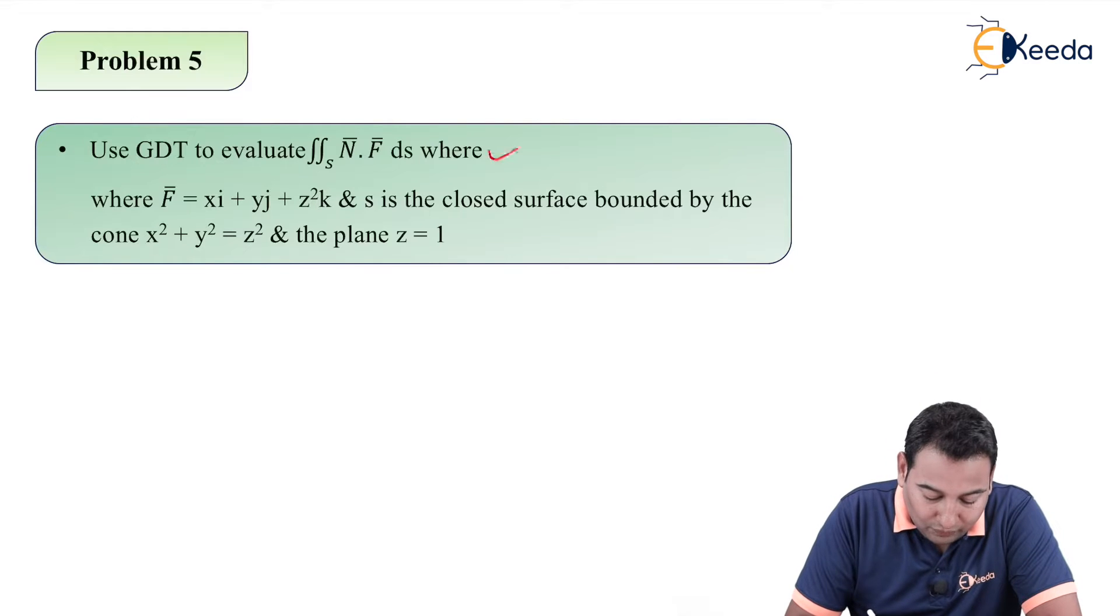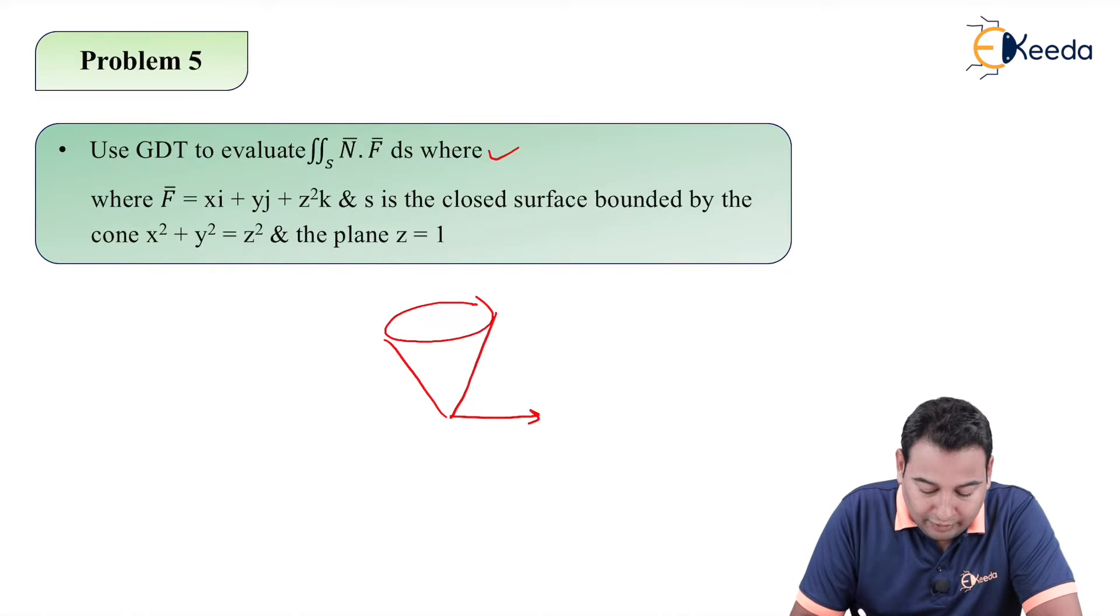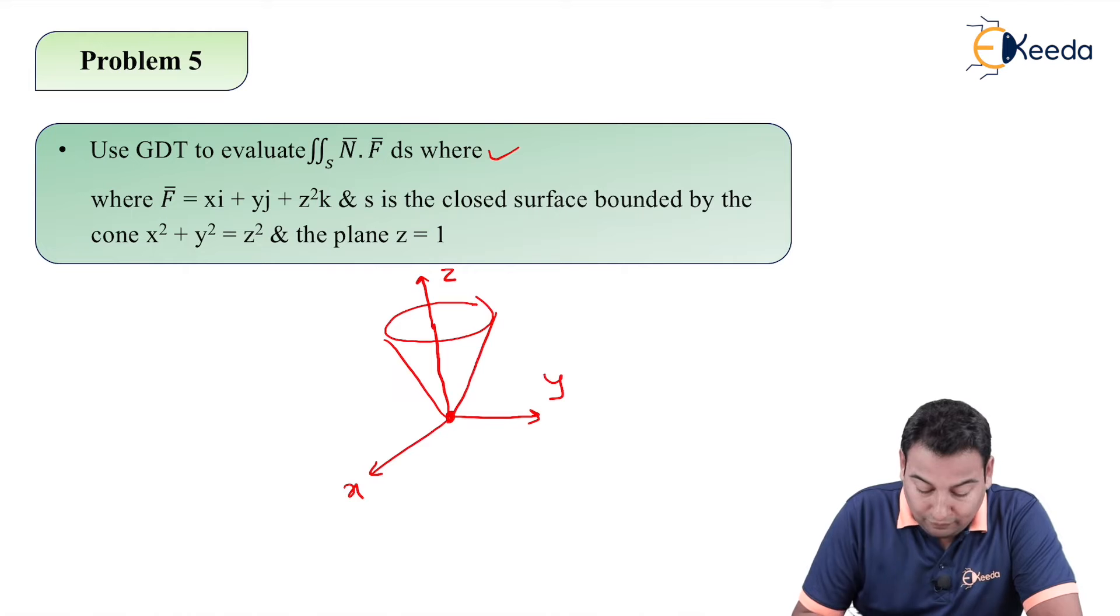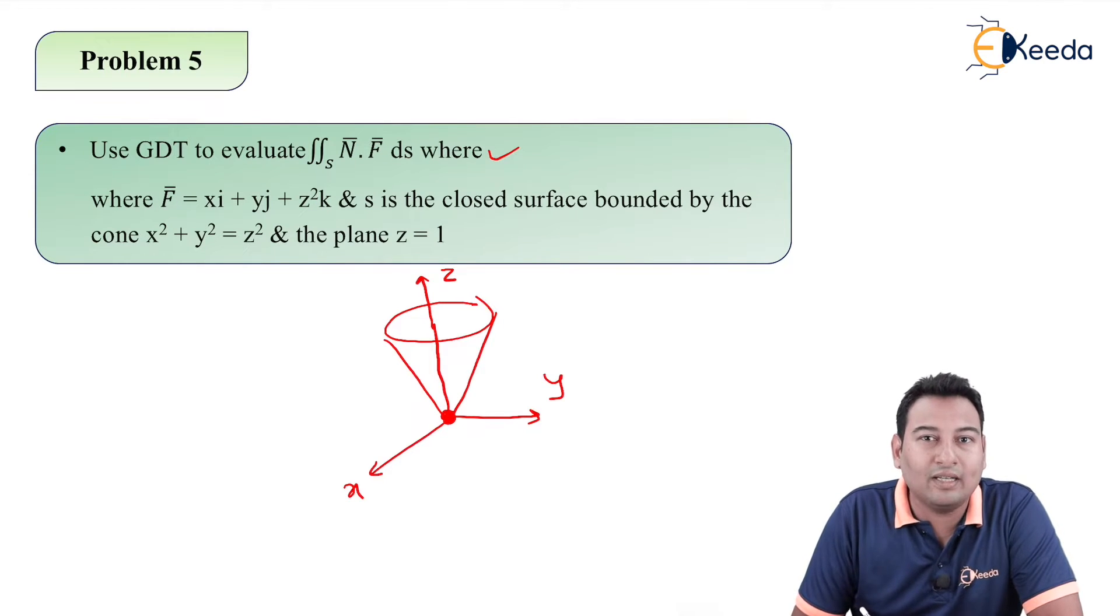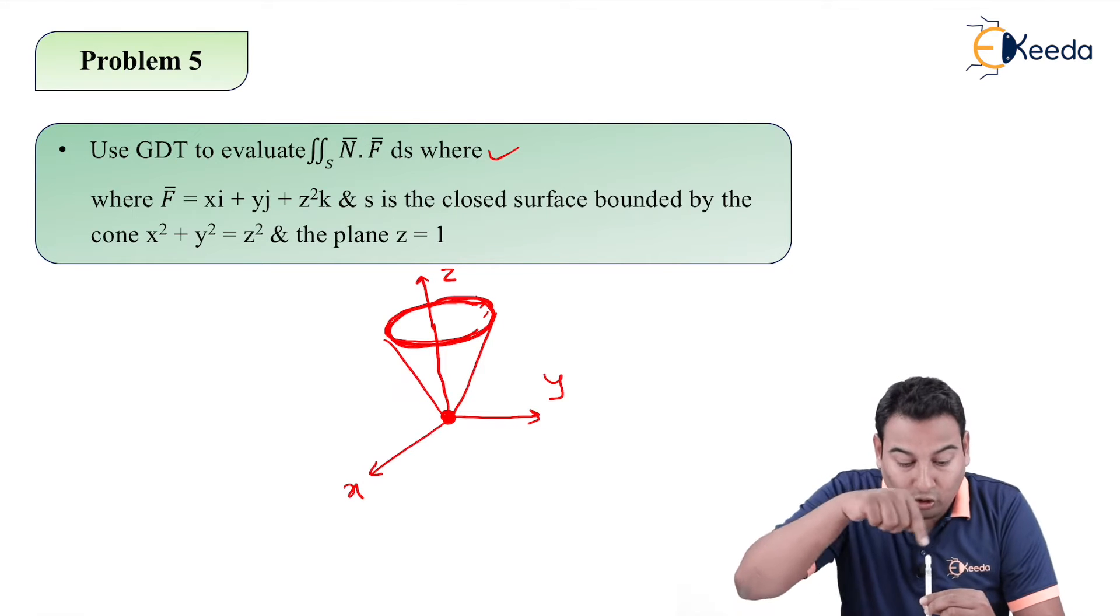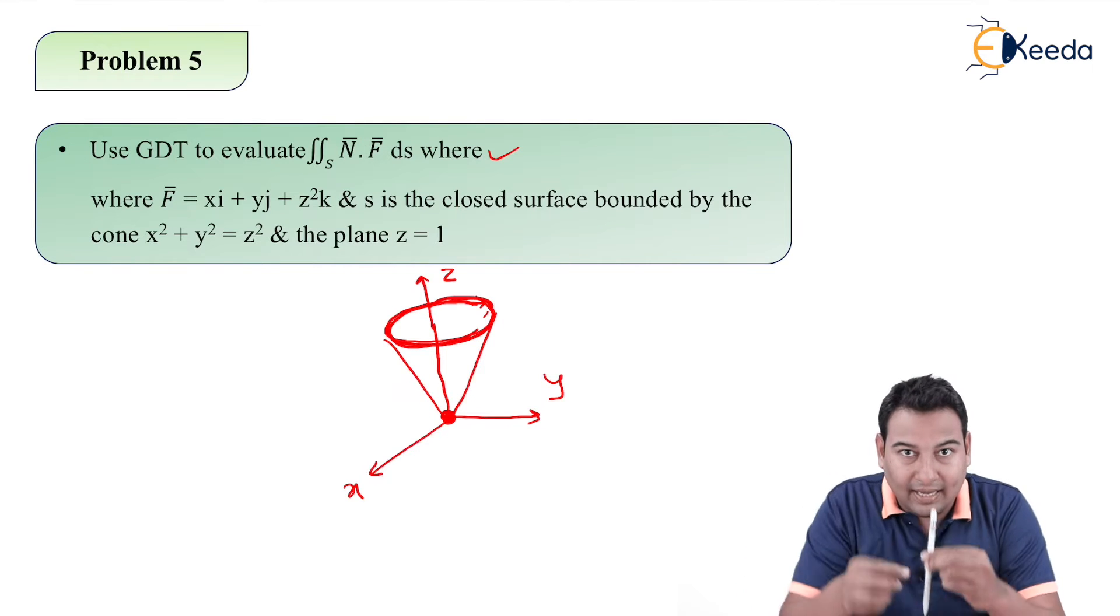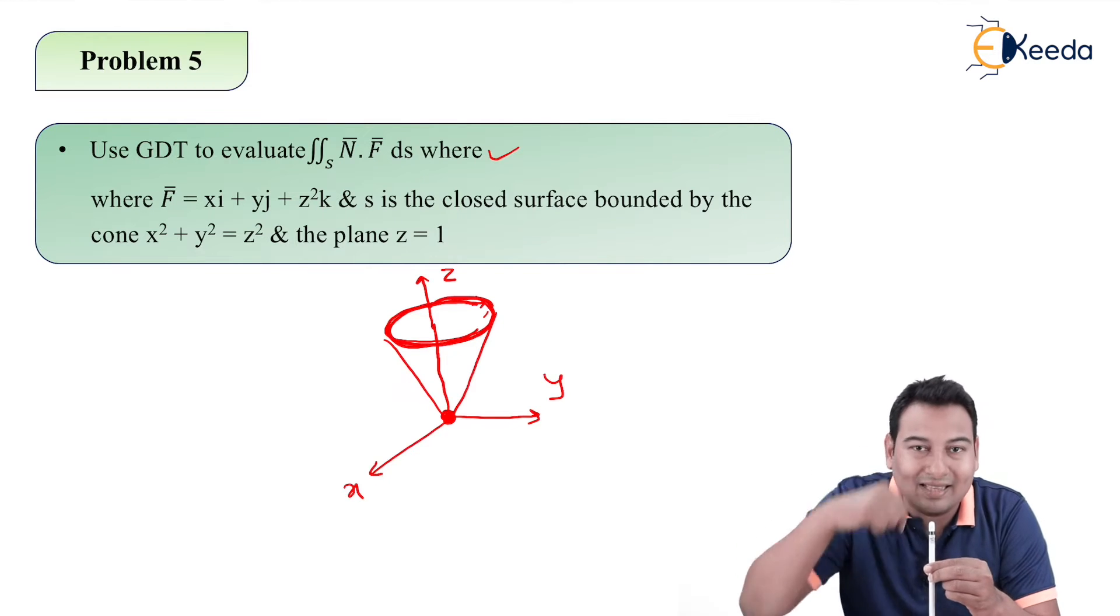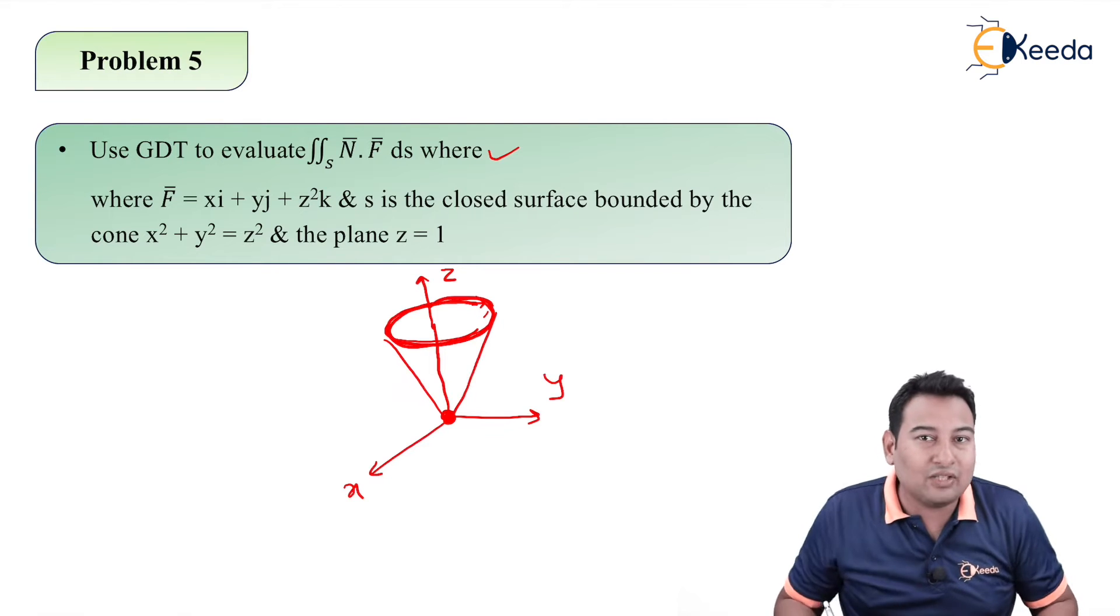Friends, let me draw the cone first. This is your cone. Here it is y, here it is x, and at top it is z. At this point, that is the meeting point, origin point, here z is 0. At the top, if you look at the cone from the top, you will find a circle. At bottom it is a point, that is z equals 0, and at top it is a circle, that is z equals 1.